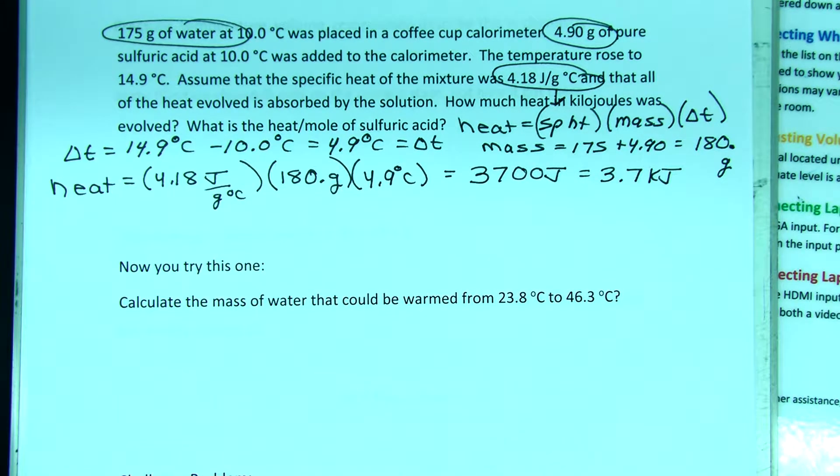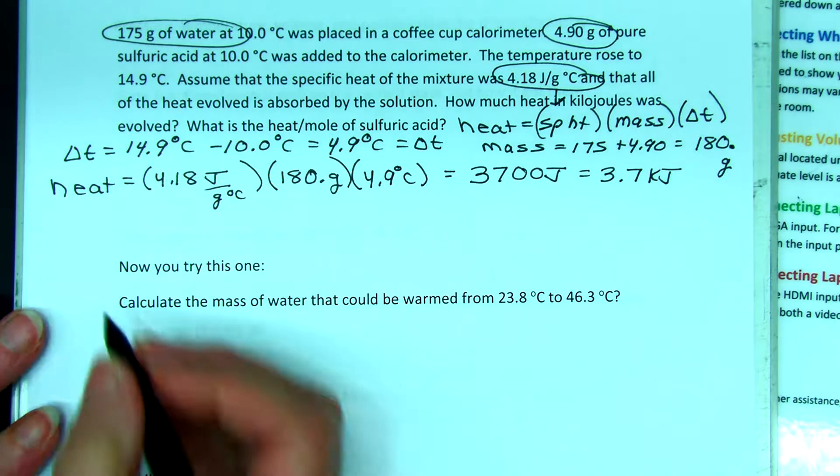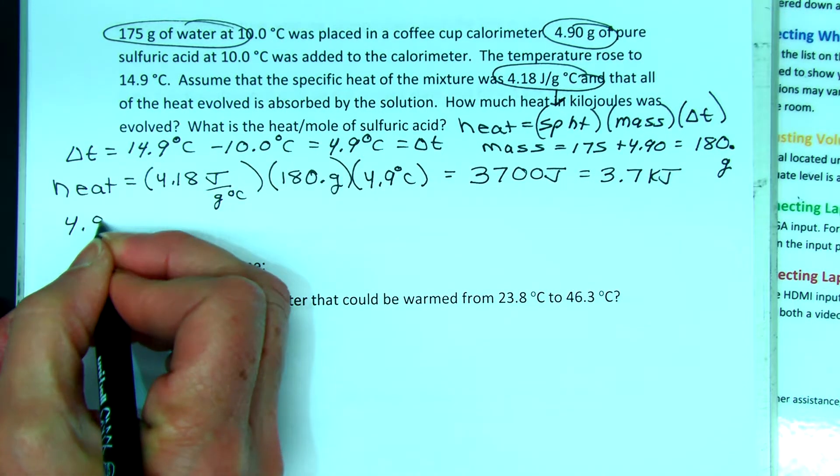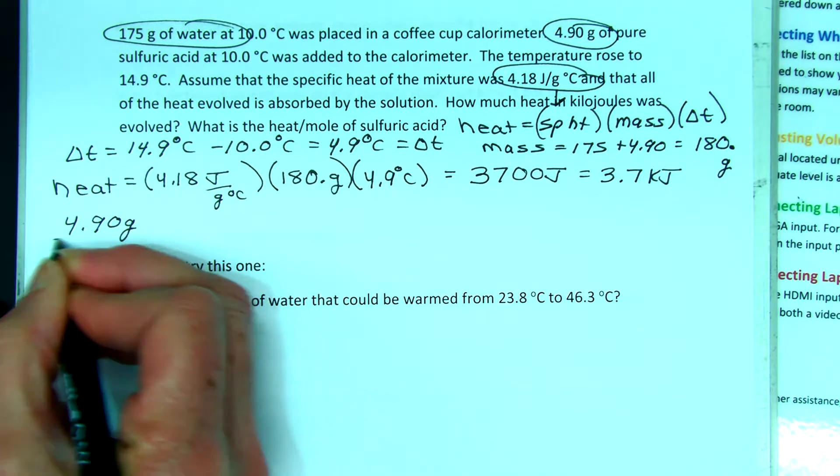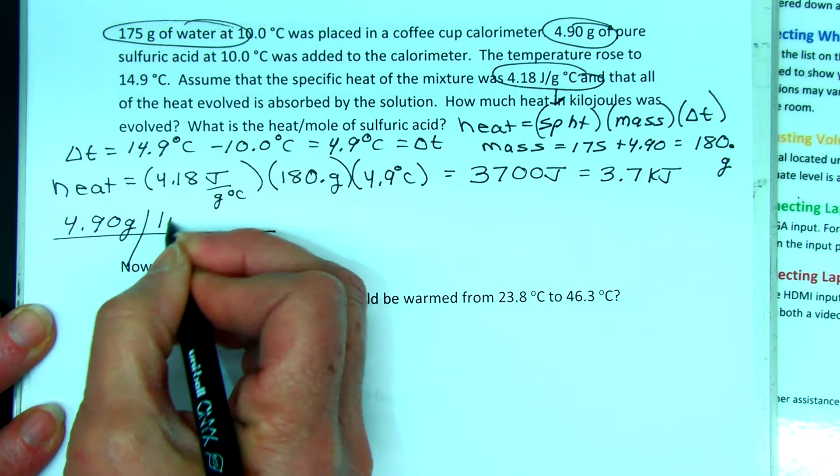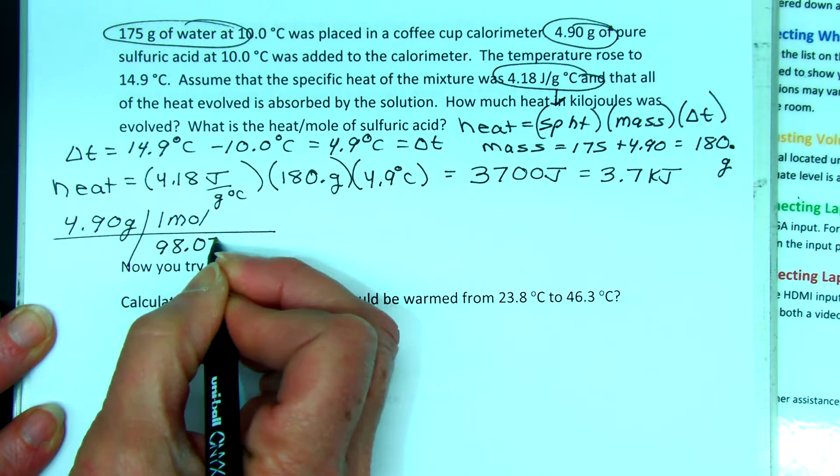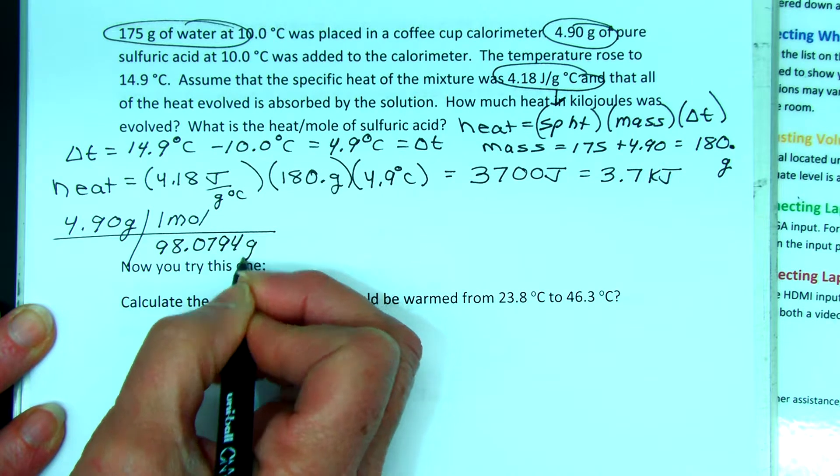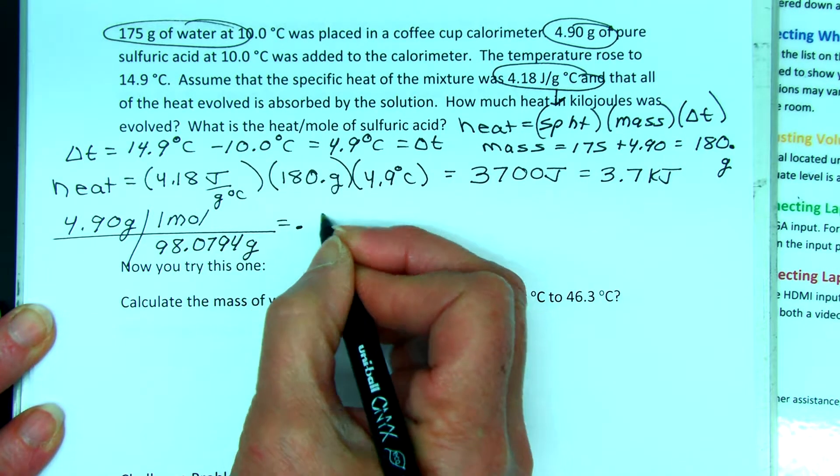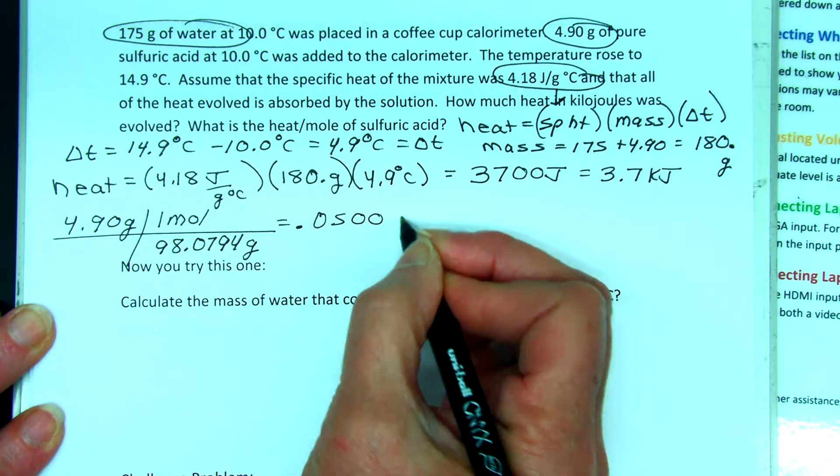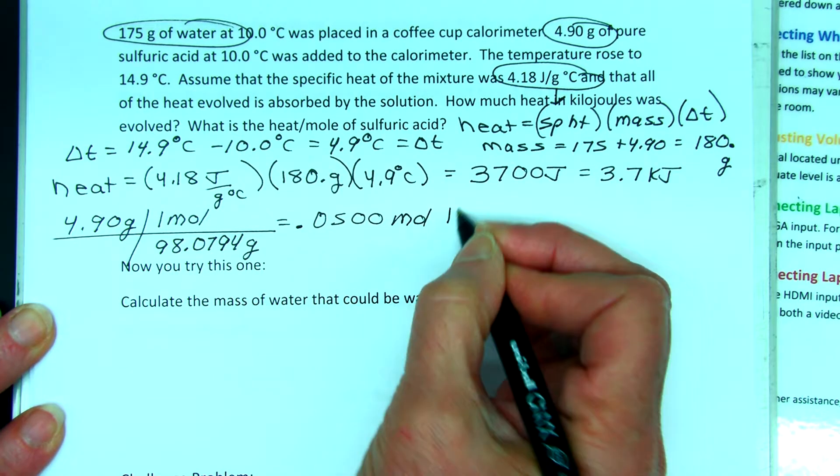Now it asks, what's the heat per mole of sulfuric acid? I know that I have 4.90 grams of sulfuric acid. I grab my periodic chart. 1 mole of sulfuric acid is 98.0794 grams, so 4.90 grams is equal to 0.0500 moles of sulfuric acid,